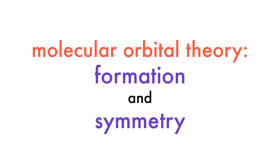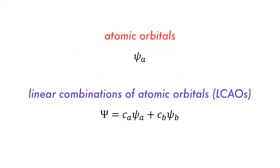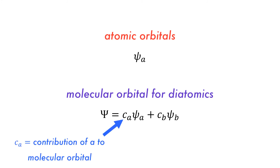Hi, it's Dr. Adam. Let's talk about how molecular orbitals are formed. We previously learned about atomic orbitals and how they could be combined to form linear combinations of atomic orbitals, or molecular orbitals, which can be expressed using this equation, where Ca is the contribution of the atomic orbital to the molecular orbital.